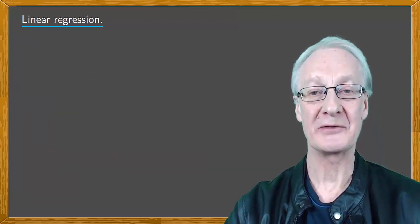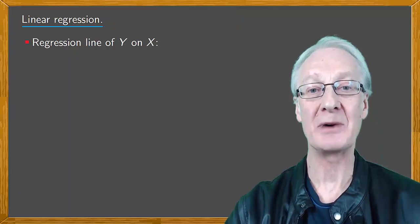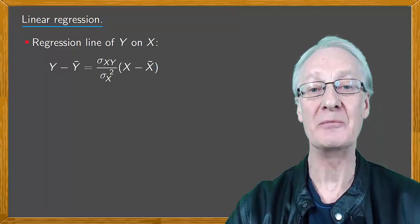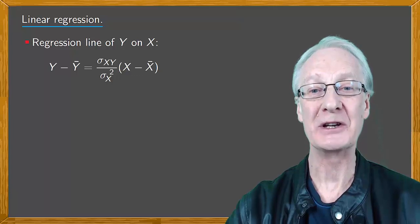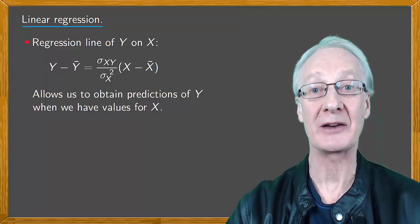There are two lines of regression. The regression line of Y on X is defined by the equation Y minus the mean of Y equals the covariance sigma XY divided by the variance of X, sigma X squared, times X minus the mean of X. We can use this line to obtain predictions of Y when we have values for X.